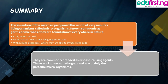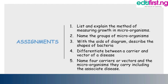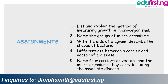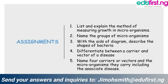I have the assignment of the week for you. First, list and explain the methods of measuring the growth of microorganisms. Second, name the phases of growth of microorganisms. Third, with the aid of a diagram, describe the shapes of bacteria. Fourth, differentiate between a carrier and a vector of a disease. Fifth, name four carriers or vectors and the microorganisms they carry, including the associated diseases.